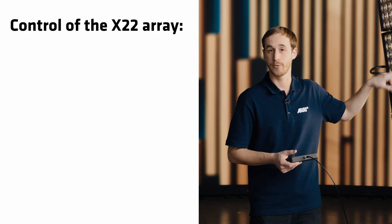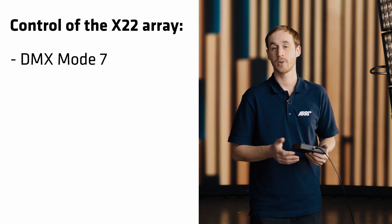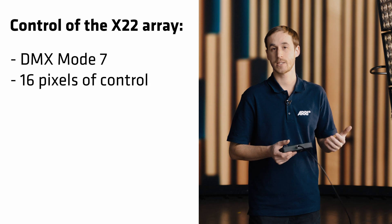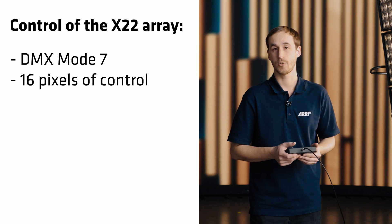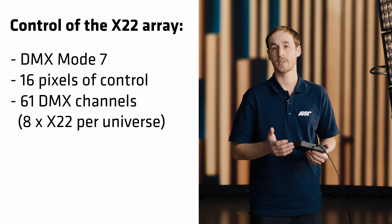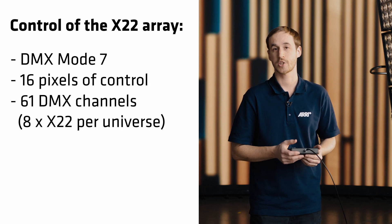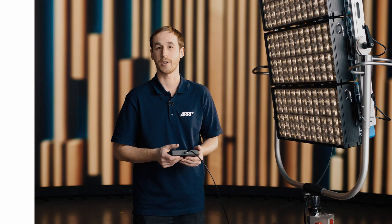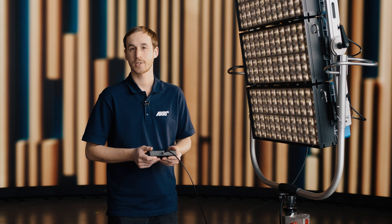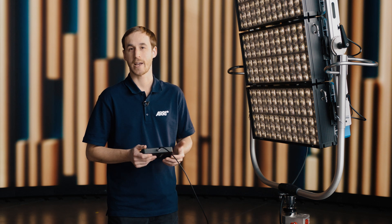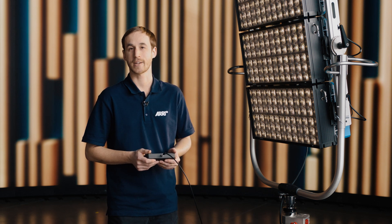And if you're using the X22, the 2x2 format, you have mode 7 — 16 pixels of control, which takes 61 DMX channels, meaning you could fit eight of them on a single universe. Thanks for watching. If you want to learn more about the SkyPanel X, check out the rest of our Tech Talks or visit us at arri.com/SkyPanelX.